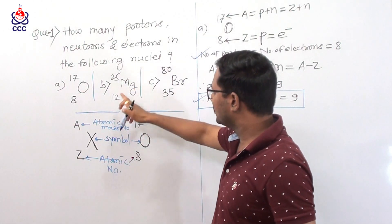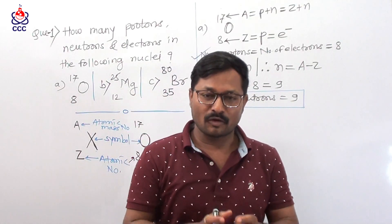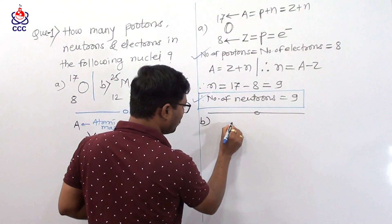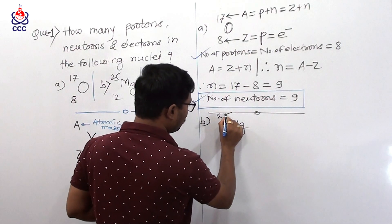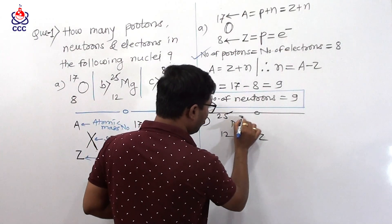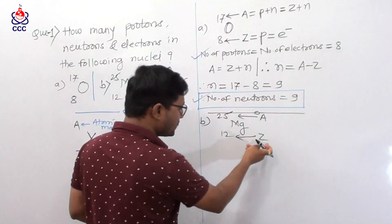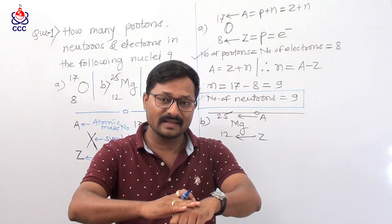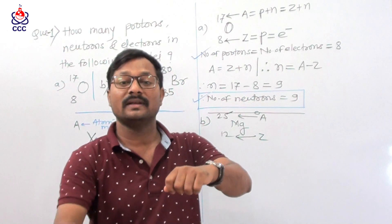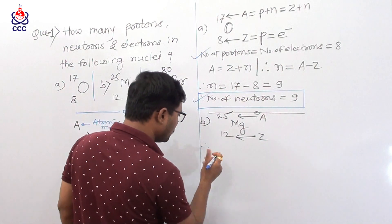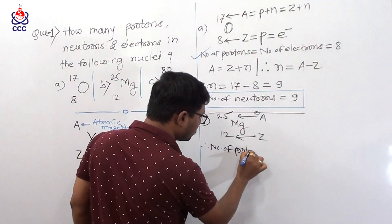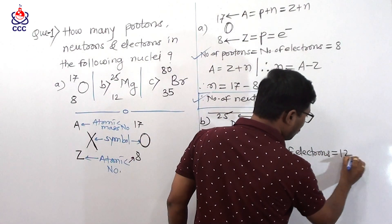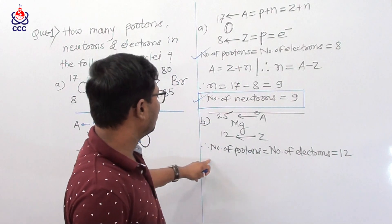Now in the second example, magnesium with atomic number 12 and atomic mass number 25. In this case we are going to find number of protons, number of neutrons, and number of electrons. Here Z is 12, meaning atomic number is 12. So the number of protons present in the nucleus are 12 and the number of electrons revolving around the nucleus are also 12. Therefore, number of protons equals number of electrons equals 12.